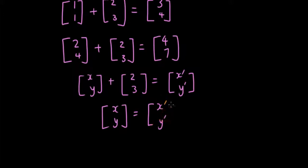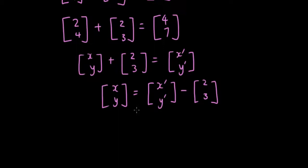So x' y' minus 2, 3, because I'm moving this matrix to the other side, which makes the operation the opposite of what's there already. So a plus turns into a minus. And now if I write out these matrices using the formulas, x will equal x' minus 2 and y will equal y' minus 3.